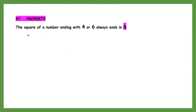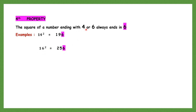The fourth property: the square of a number ending with 4 or 6 will always end in 6. For example, 14 squared — 14 ends in 4 and the square ends in 6. 16 squared — ends in 6 and the square ends in 6. 24 squared ends in 4 and the square ends in 6. 36 squared ends in 6 and the square also ends in 6. So if a number ends with 4 or 6, the square will always end in 6.